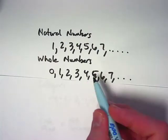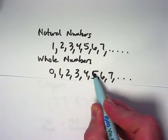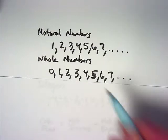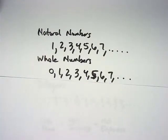If we do include zero, we call it the set of whole numbers. So 0, 1, 2, 3, 4, 5, 6, 7, et cetera. This is supposed to be a five here. That would be the collection or set of whole numbers that goes on forever as well.